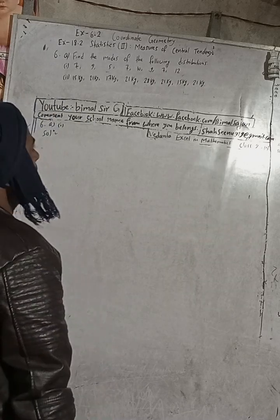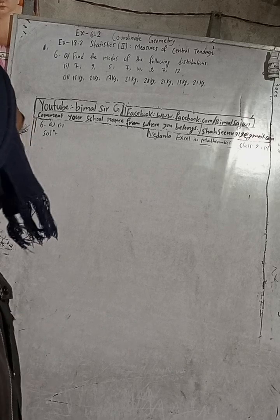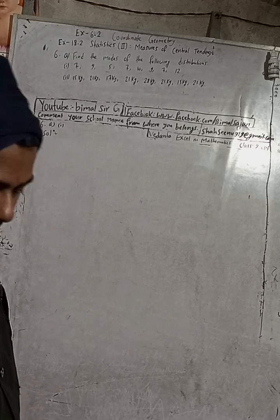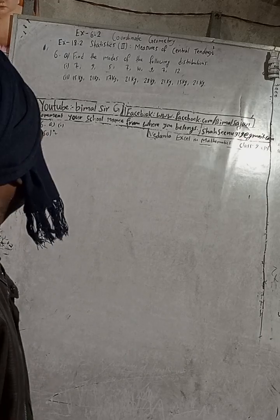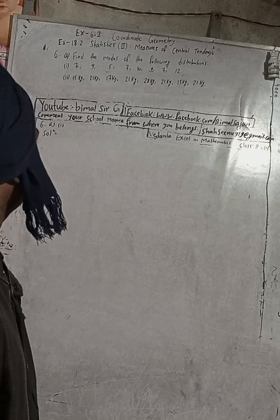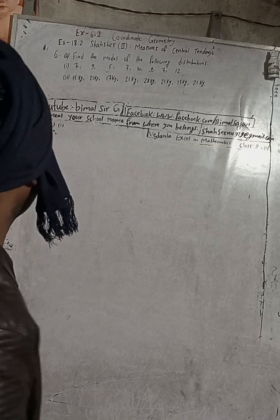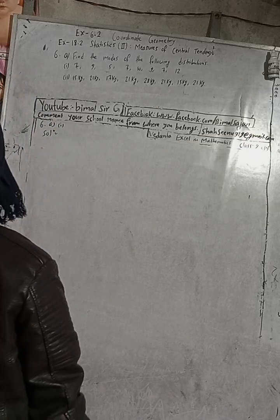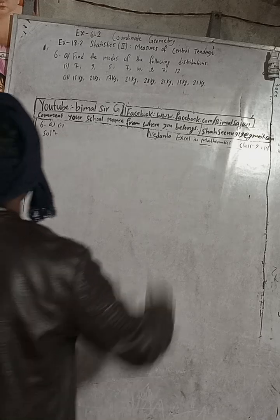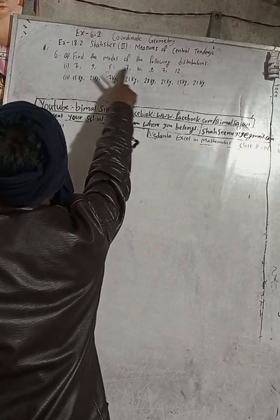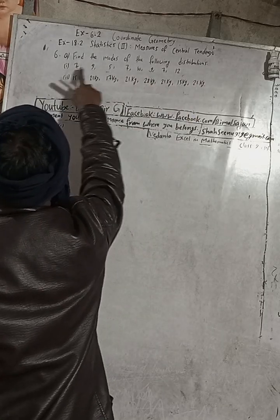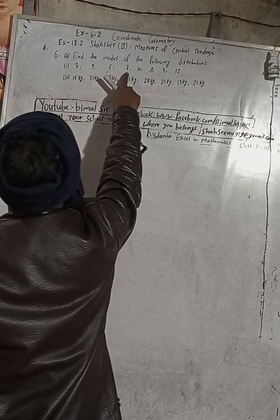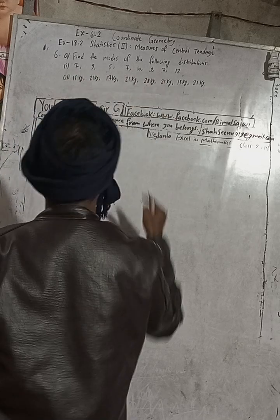This is the demand of one of my YouTube viewers, so this is for you. Due to limited time I cannot solve much more, but at least I can help you with a few questions. The question is: find the modes of the following distributions. Here is the first set of numbers: 7, 9, 5, 7, 10, 9, 7, and 12.